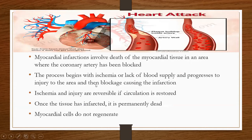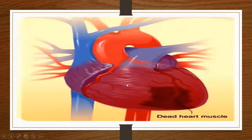Myocardial infarctions involve death of the myocardial tissue in an area where the coronary artery has been blocked. The process begins with ischemia, or lack of blood supply, and progresses to injury to the areas, and then causing the infarction. Ischemia and injury are reversible if circulation is restored; however, once the tissue has infarcted, it is permanently dead. Myocardial cells do not regenerate.